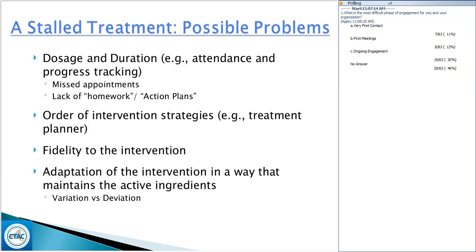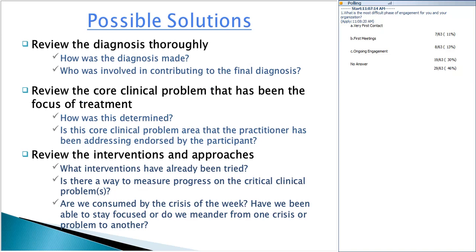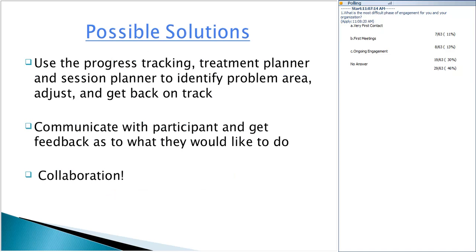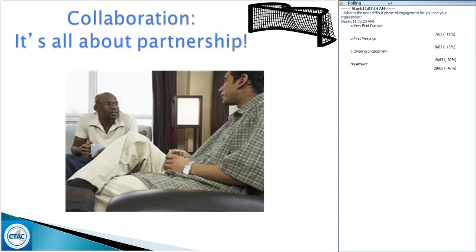Possible solutions for stalled treatment: review the diagnosis thoroughly — who was involved, was it made correctly? Jason presents with substance abuse but may also have underlying depression or anxiety that needs attention. Review core clinical problems that have been the focus of treatment. Review the interventions and approaches. We have a treatment planner, a progress tracker, and a session planner — all great tools to use with stalled treatment. Communicate with participants and get feedback after every session. And of course, collaboration is essential — it's all about partnership to reach goals.